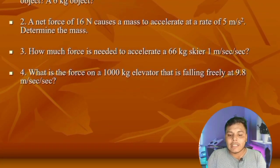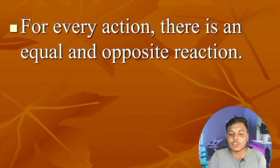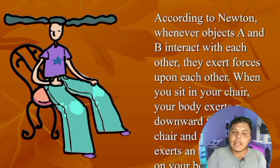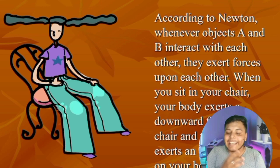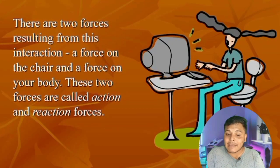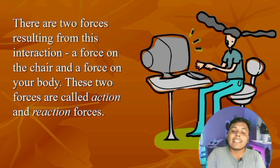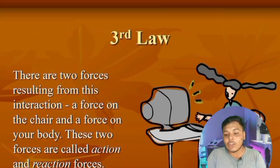Now let's talk about the third law of motion — every action has an equal and opposite reaction. For example, if we are sitting on a chair, our body pushes the chair downward and the chair pushes our body upward. That upward force is called lift. The downward push of our body is the action and the upward push of the chair is the reaction — that is the law of action and reaction.